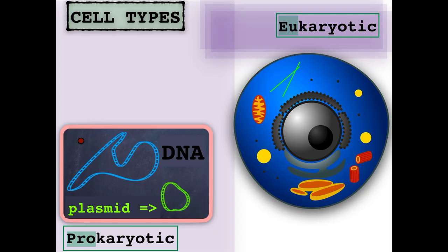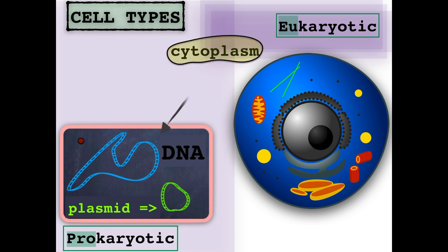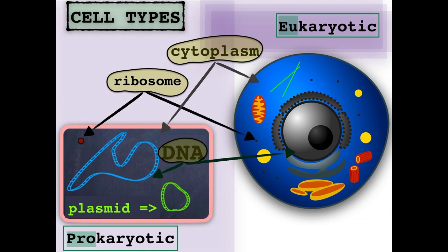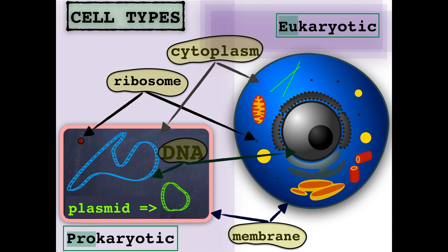The prokaryotic cell is represented on the figure on the left and the eukaryotic on the right. Both cell types share some similar features, such as they have a cytoplasm which fills up the cell, DNA, ribosomes — which are the structures responsible for protein synthesis — and both cell types are surrounded by a cell membrane. The prokaryotic cells are generally much smaller than the eukaryotic cells, and they both have different shapes. As you can see on this image, the eukaryotic one is much more complex than the prokaryotic one.